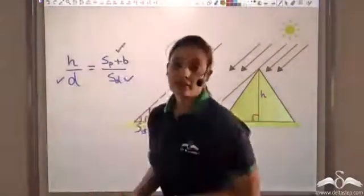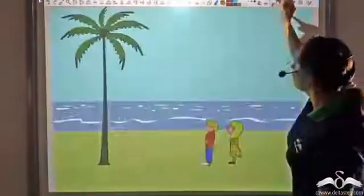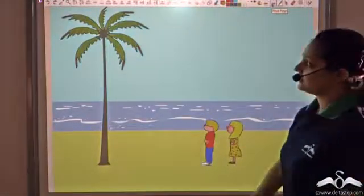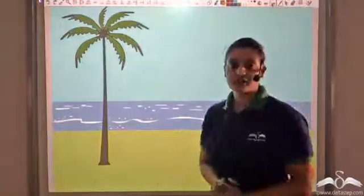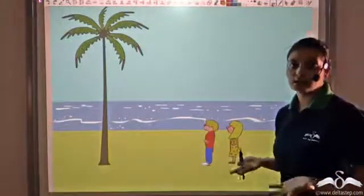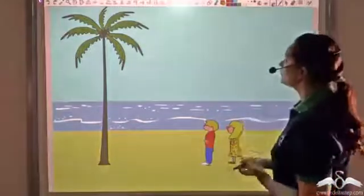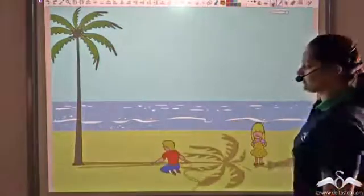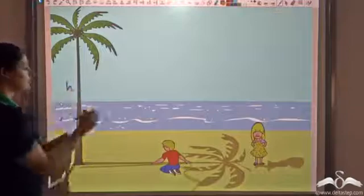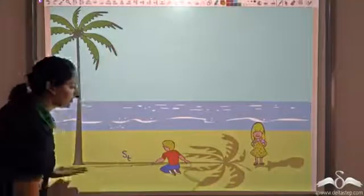So this is how Thales actually used the principle of similarity and shadows to find the height of the pyramids. Now let's look at another application. Alice goes to a beach with her brother and they see a tall tree. They were very curious to find the height of this tree. So if this is the tree, let's say the tree is of height H and the shadow of this tree is ST.